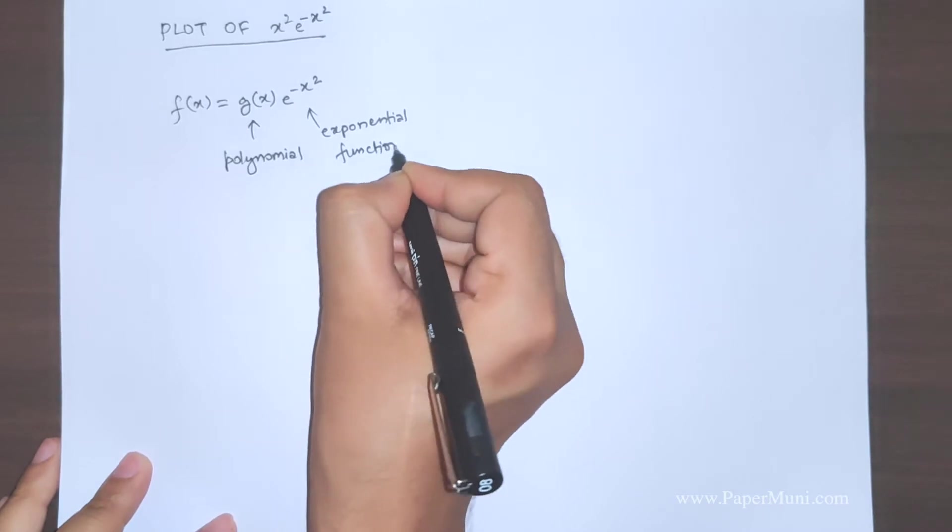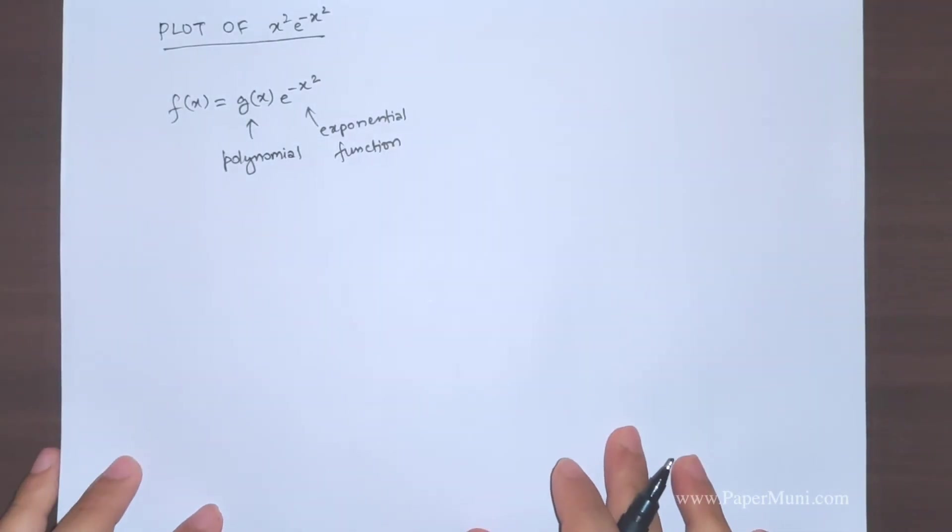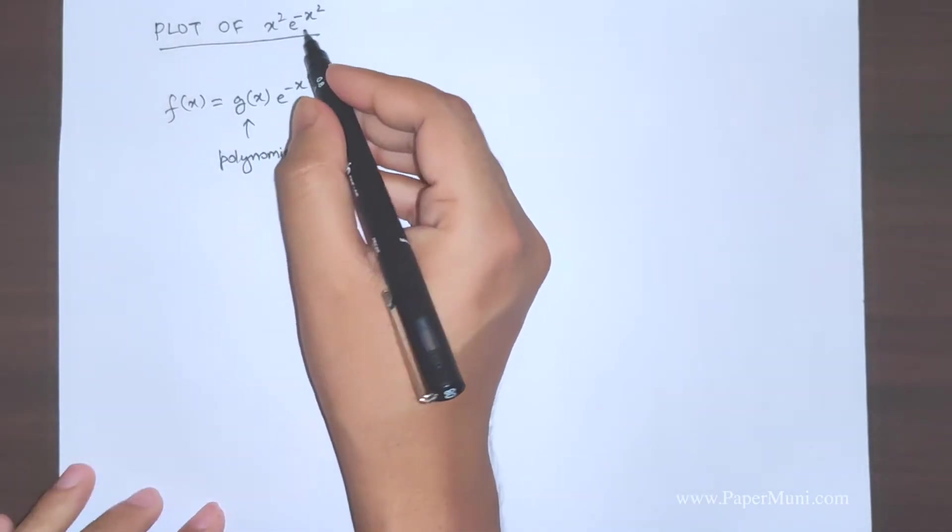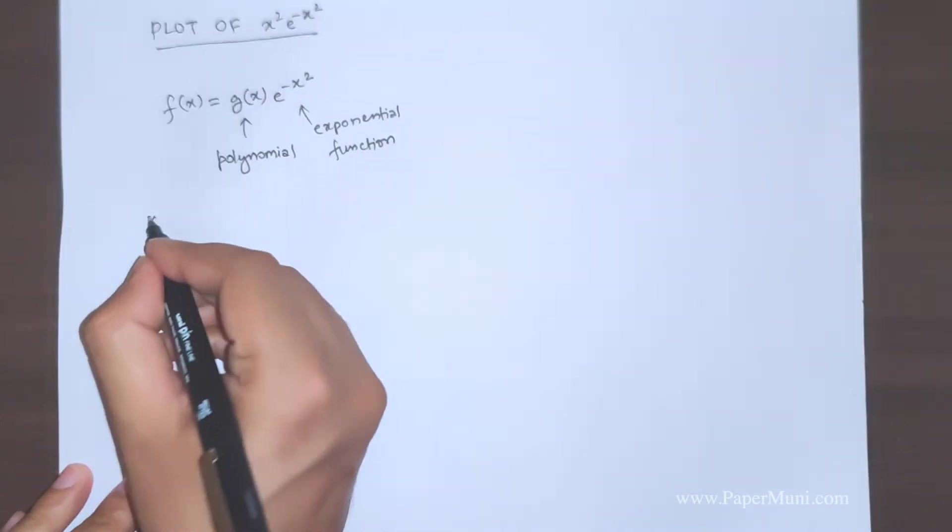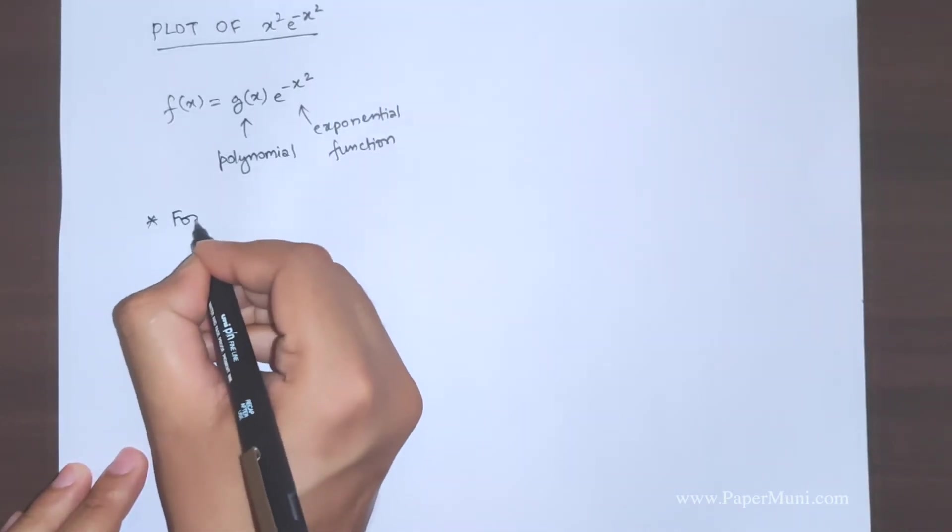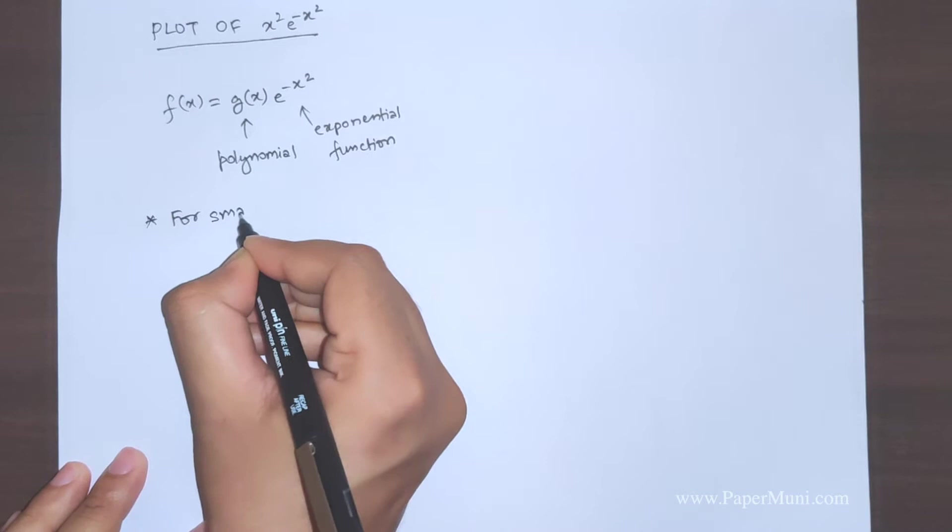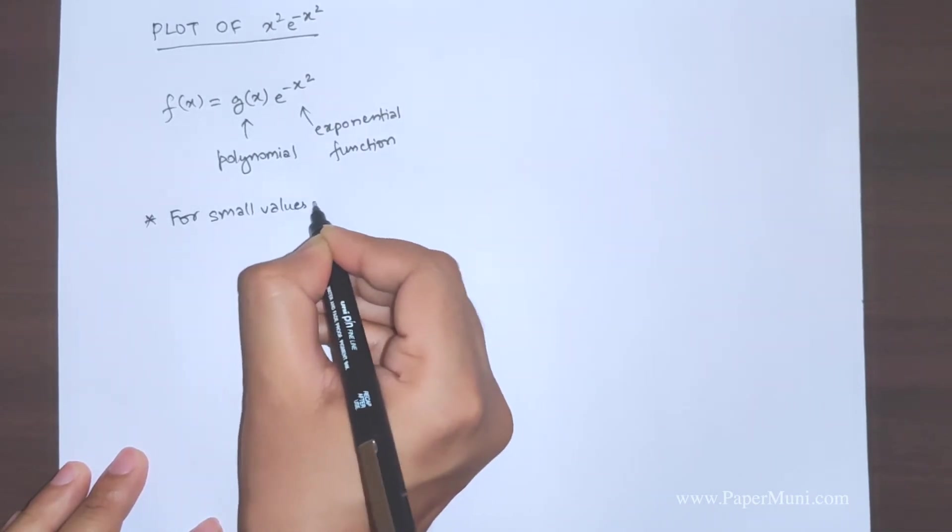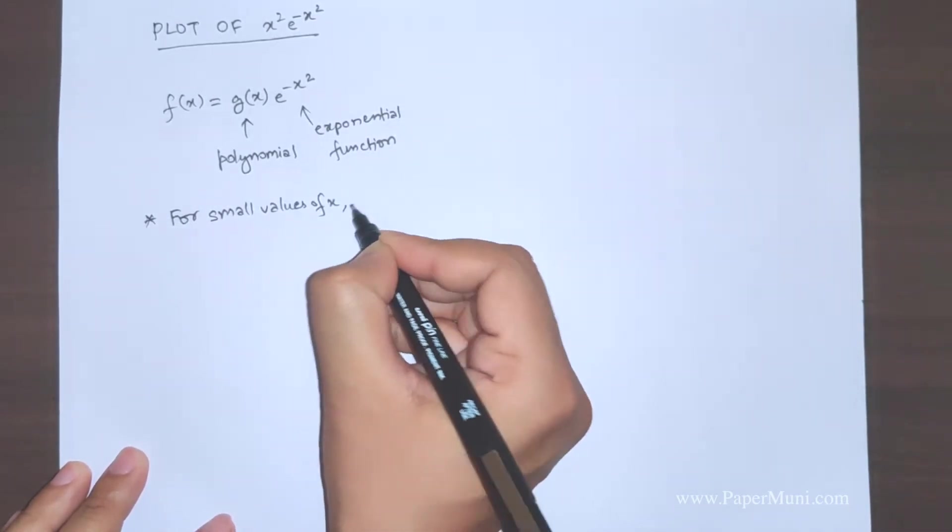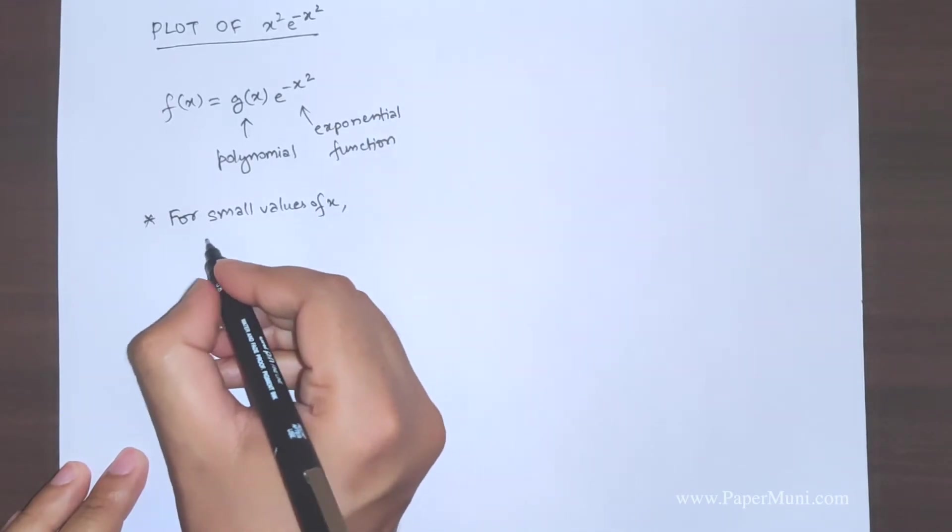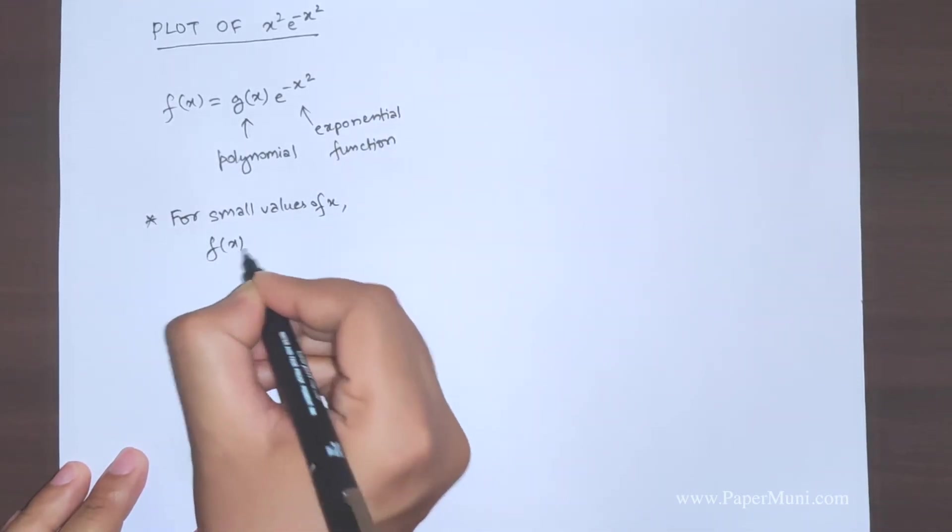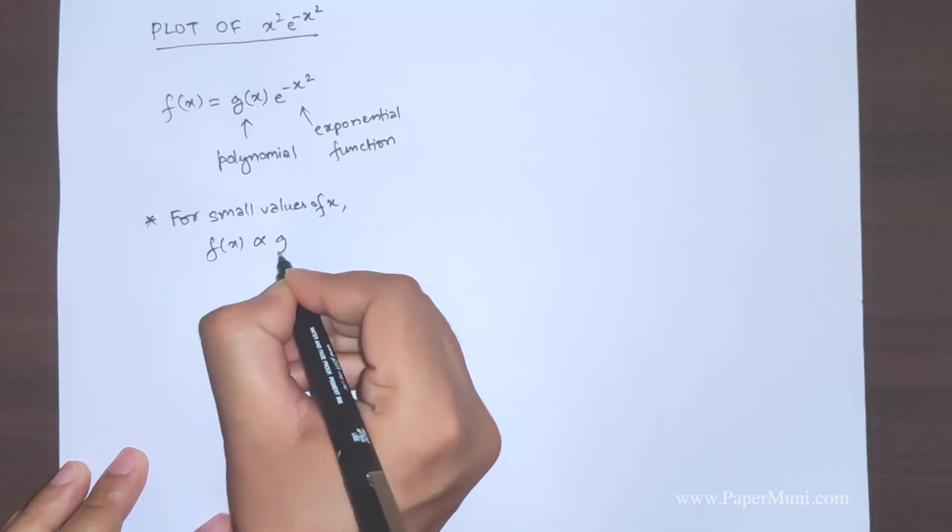So if you find this kind of plot, which is what we have here, then always remember these two things: that for small values of x, f(x) is proportional to the polynomial.